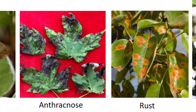Rusts are named for the dry, gelatinous, orange, reddish, or yellowish fruiting bodies and spore masses that form on the undersides of leaves on infected tissue on many species.